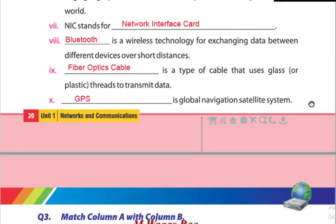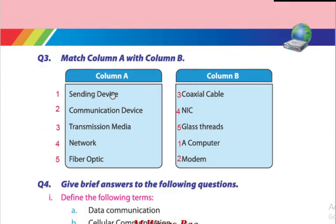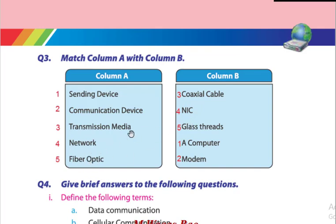Now we have to solve the match columns — match column A with column B. On the left side are numbers and on the right side is column B. Sending device — which one is the sending device? Definitely, computer. Communication device — modem is a communication device. Transmission media — which one is transmission media? Coaxial, fiber optic, and twisted pair — all three are transmission media. Network interface is NIC — Network Interface Card. Fiber optic uses glass threads.